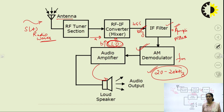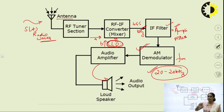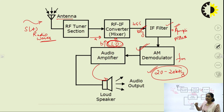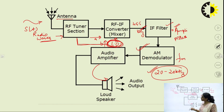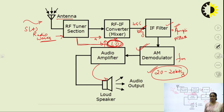Why is it called a superheterodyne receiver? Heterodyne means mixing. The mixing of signals occurs at the product modulator, so the name heterodyne refers to this mixing process. After receiving the radio frequency signal, it is passed to a product modulator or mixer — hence heterodyne occurs there. The tuned local oscillator is connected to the RF section; it reads the input frequency and adjusts its own frequency so that A minus B always equals 455 kHz.